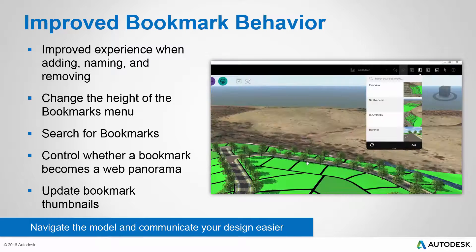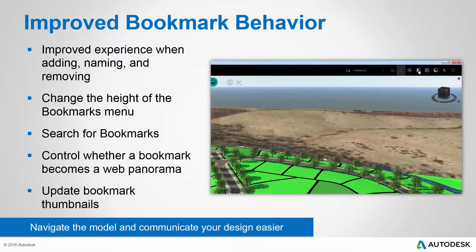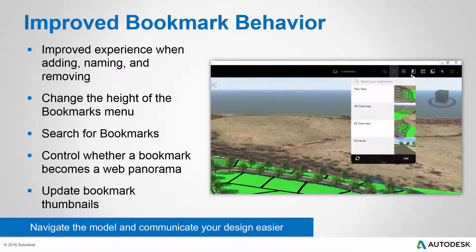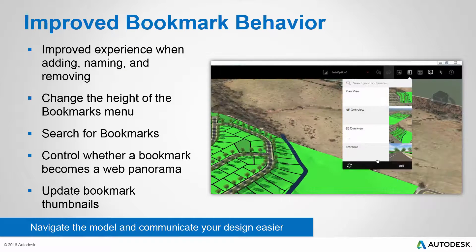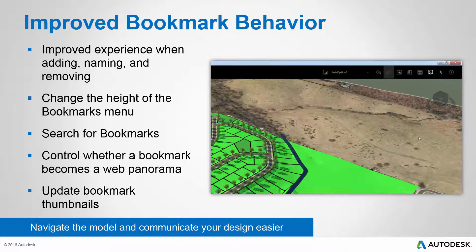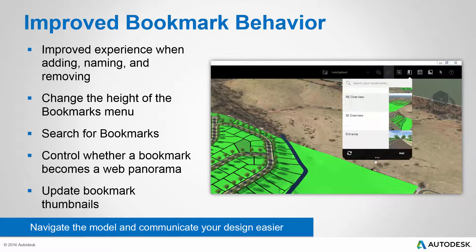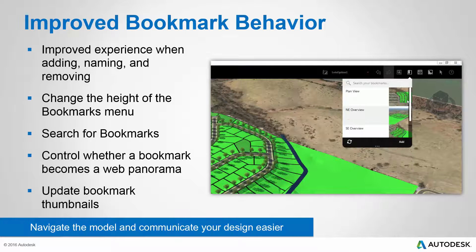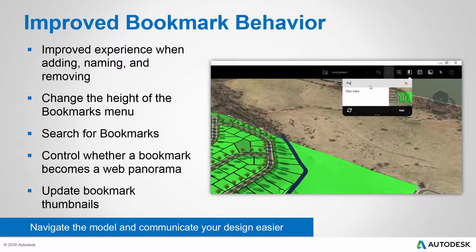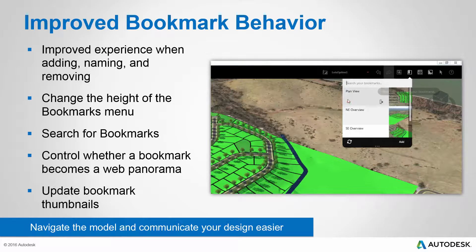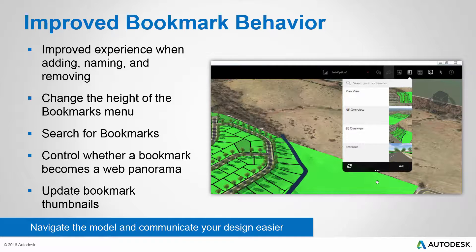You'll find added functionality in that you can change the height of the bookmarks menu — make it as long or short as you want. This is really helpful because it's possible to have many, many bookmarks in your model, or maybe just a few. If you do have a lot of bookmarks, you can use the search functionality at the top to type in a keyword, and InfraWorks 360 will filter the list to only show what matches. You can also use a handy icon to control whether a bookmark becomes a web panorama by simply toggling that feature on or off.